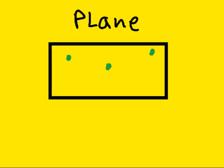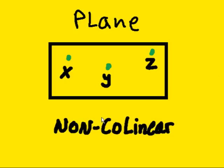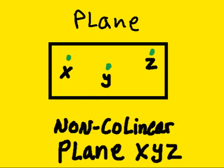Here we can see three points on the plane. If they are non-colinear points, and we'll call them X, Y, and Z, then we can call the plane X, Y, and Z.